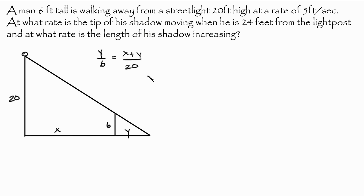Now just cross multiply. So you get 6 times x plus y which is going to be 6x plus 6y, and that's equal to 20y. We can move the y to the other side and get 6x is equal to 14y. So there we go. Now we've related x and y.